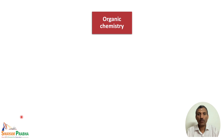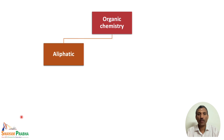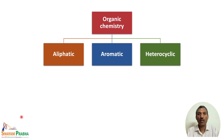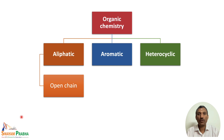Before we get into heterocyclic chemistry, let us look at the broad classification of organic chemistry. Organic chemistry is basically classified into three major categories: the first is aliphatic compounds, the second is aromatic compounds, and the third and most important is heterocyclic compounds. Aliphatic chemistry is further divided into open chain and carbocyclic frameworks.